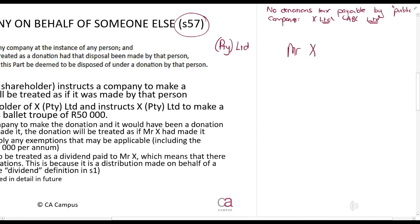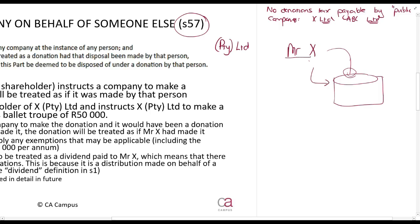Usually a private company is involved. So let's say Mr. X creates a company and does his business through it. This company has some money in it. Mr. X goes to the company and says, 'Please make a donation to my daughter's school band' — let's say a school orchestra. They play music at the school. So Mr. X says to the company, 'Please make a donation.'